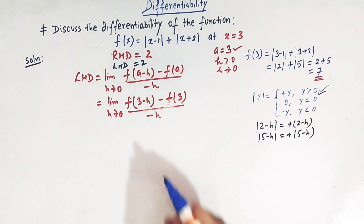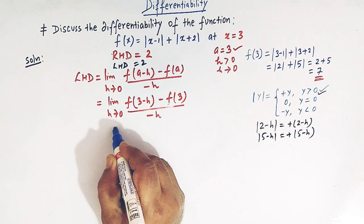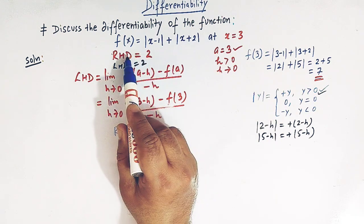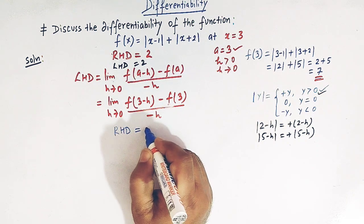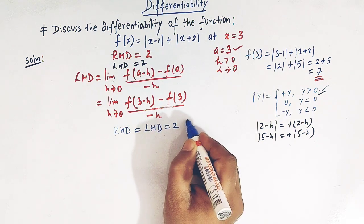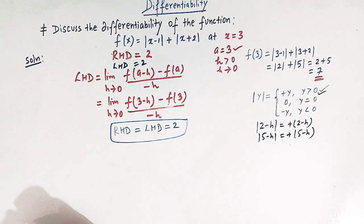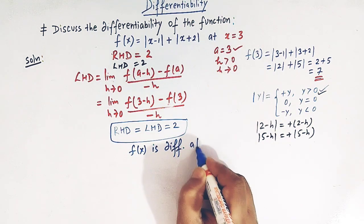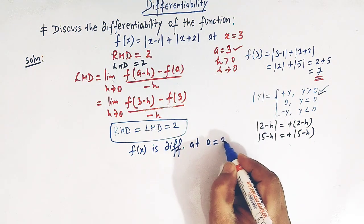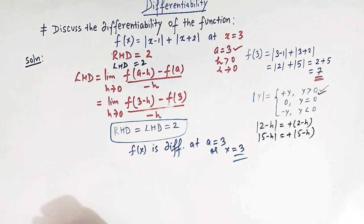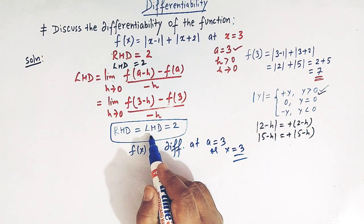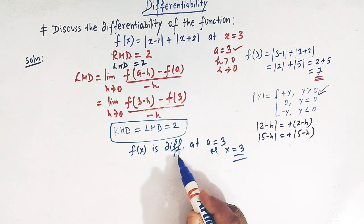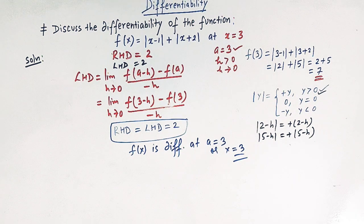The right hand derivative and the left hand derivative are both finite and equal to 2. Since the right hand derivative equals the left hand derivative, we can claim that the function f(x) is differentiable at x = 3.